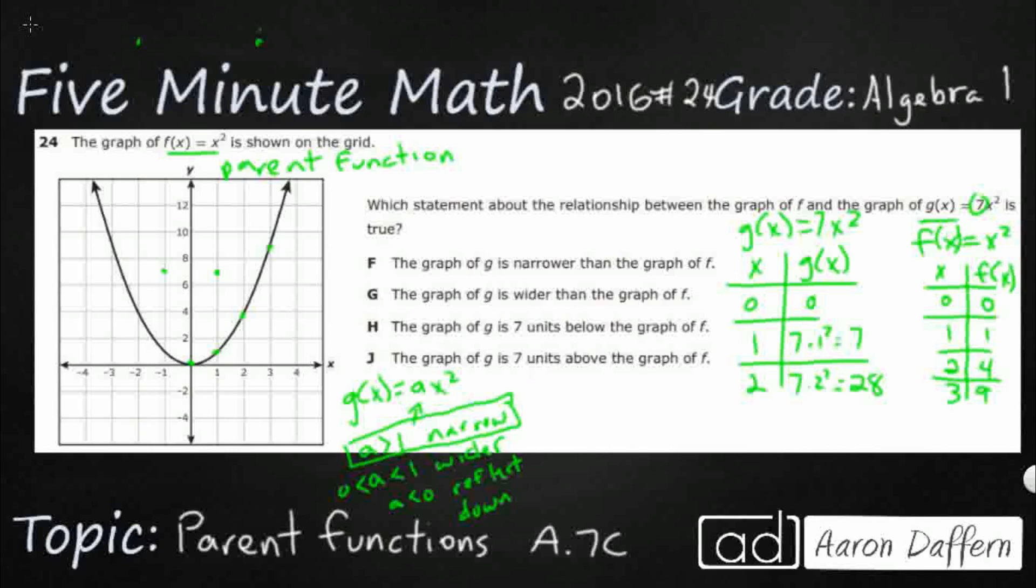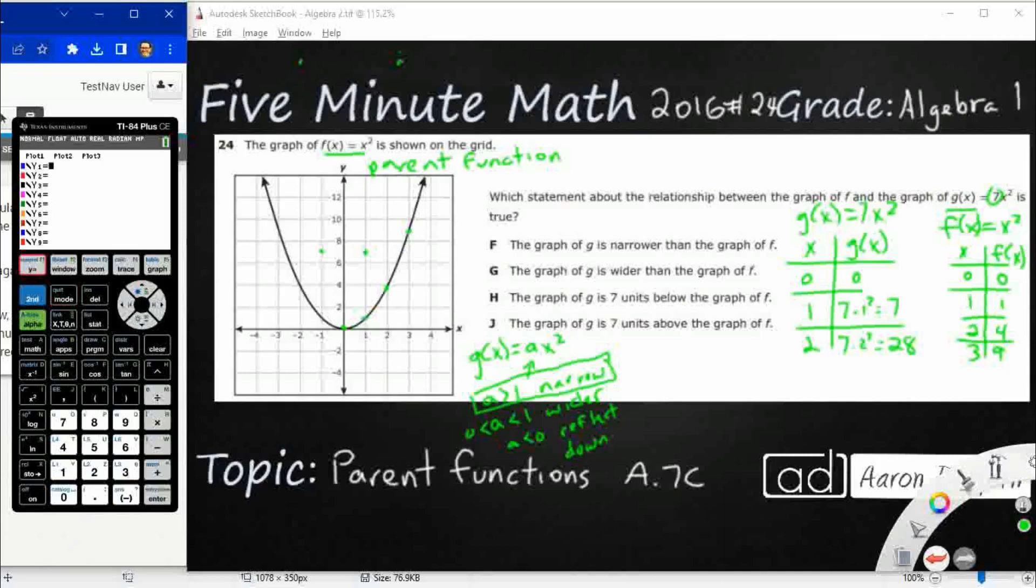Now, if we want to double check this, let's go ahead and open up our graphing calculator and make sure we're correct. So let's go to our y equals and let's go ahead and just put in the parent function. So let's just say y = x². And we'll see that we're going to get this very basic graph here.